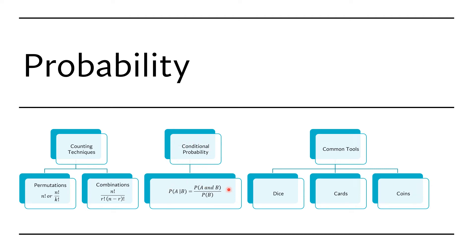The idea of conditional probability may come up in the exam. The concept is: if the question asks for the probability of something happening given that something else has already happened, you express this as the probability of A given B. The formula puts the probability of A and B happening simultaneously in the numerator, divided by the probability of B. These are the common topics in probability.